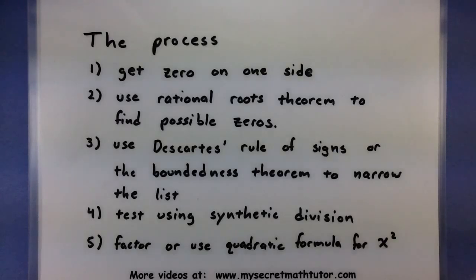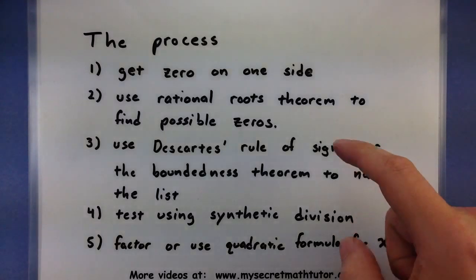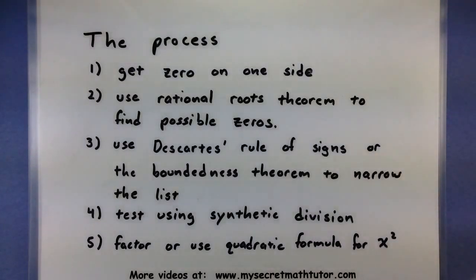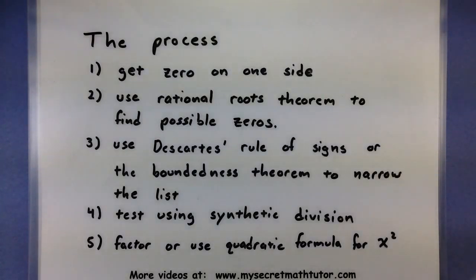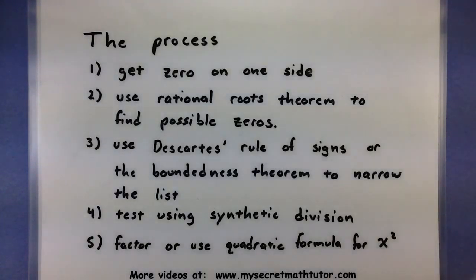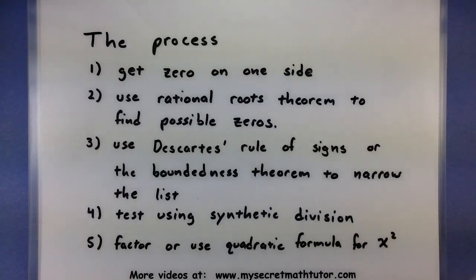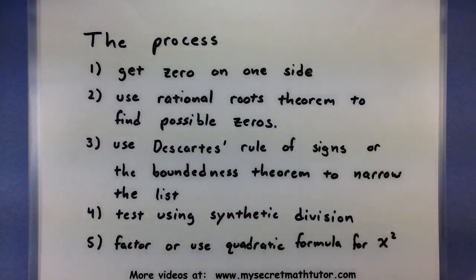From each of the factors, we'll set them equal to zero. Now the factoring process is where we'll have to do lots of work. The very first thing we'll do is come up with a list of possible zeros. Then to make this list smaller, we'll use Descartes' rule of signs and the boundedness theorem to knock off a few things that just aren't going to work. Throughout this process, we will use synthetic division to quickly test those possible zeros. If we ever break down our polynomial to something like x squared, then we can use the quadratic formula or simple factoring to take care of the rest. So let's look at the example problem.